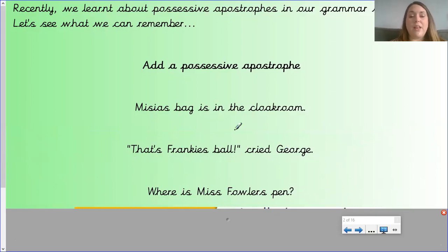Okay, let's have a look. The bag belongs to Misha so the apostrophe must go in the word Misha's. It goes between the A and the S. That's Frankie's ball. The ball belongs to Frankie so the apostrophe goes in the word Frankie's. It goes between the E and the S. And where is Miss Fowler's pen? Well the pen belongs to Miss Fowler so the apostrophe will go in the word Fowler's and it will go between the R and the S.